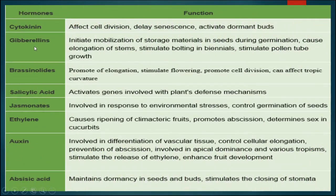Here is a list of hormones and the functions they control. Cytokinin affects cell division, delays senescence, and activates dormant buds. Gibberellic acid initiates the mobilization of storage materials in seeds during germination, is responsible for elongation of stem, stimulates bolting in biennial plants, and stimulates pollen tube growth. Ethylene is responsible for ripening of fruits, promotes abscission, and determines sex in the cucurbit family. Auxin is involved in differentiation of vascular tissue, controls cellular elongation, prevents abscission, enhances fruit development, stimulates release of ethylene, and is involved in apical dominance and various types of tropism.